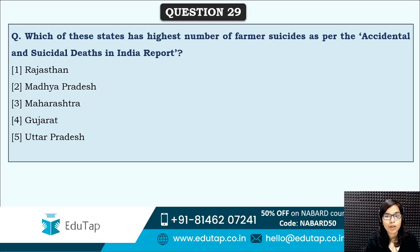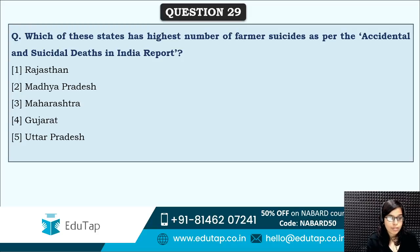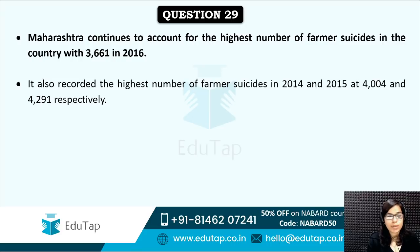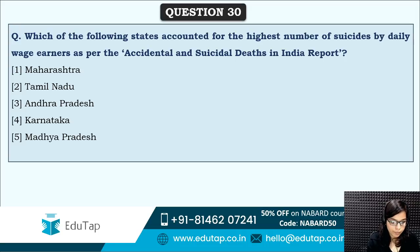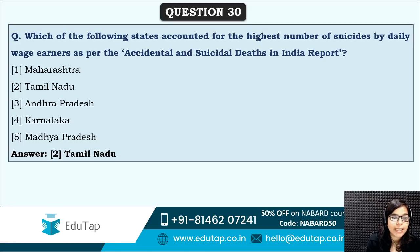Next: which of these states has the highest number of farmer suicides as per the Accidental and Suicidal Deaths in India report? The correct answer is option three — Maharashtra. Maharashtra continues to account for the highest number of farmer suicides, with 3,661 suicides in 2016. Next: which state accounted for the highest number of suicides by daily wage earners? The correct answer is option two — Tamil Nadu. So for farmers it is Maharashtra, and for daily wage earners it is Tamil Nadu.